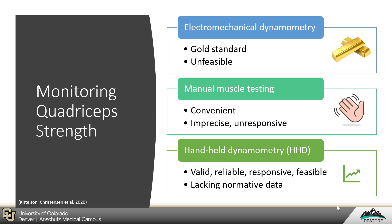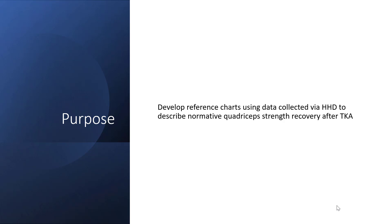Therefore, clinicians lack the means of determining whether a patient's quadricep strength, as assessed by handheld dynamometry, is normal or abnormal at a particular post-operative standpoint. Therefore, the purpose of this study was to develop reference charts using data collected via handheld dynamometry to describe normative quadricep strength recovery after TKA.